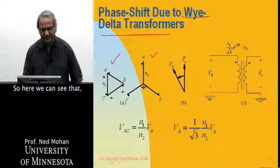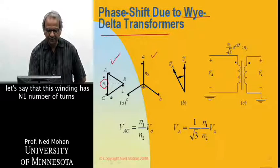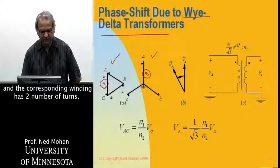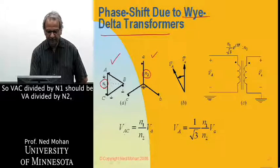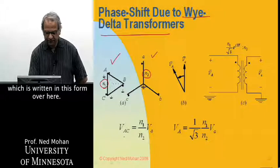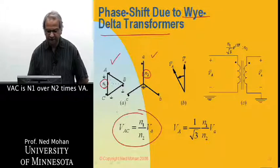So here we can see that, let's say this winding here has N1 number of turns, and the corresponding winding here has N2 number of turns. So VAC divided by N1 should be VA divided by N2, which is written in this form over here. VAC is N1 over N2 times VA.